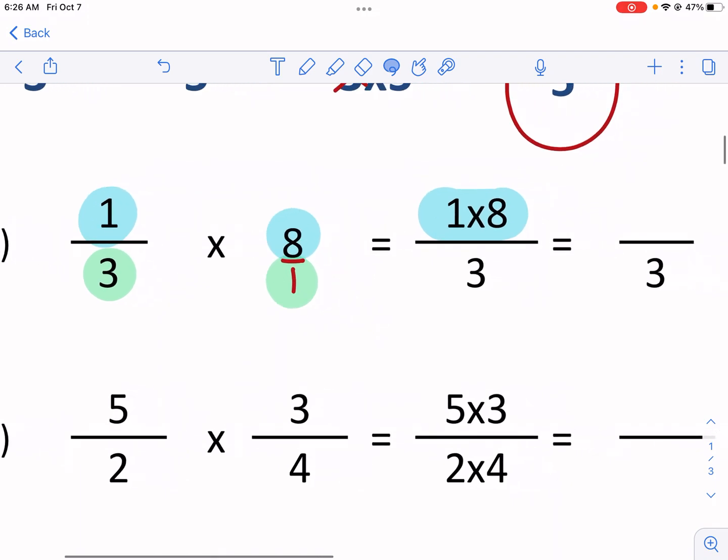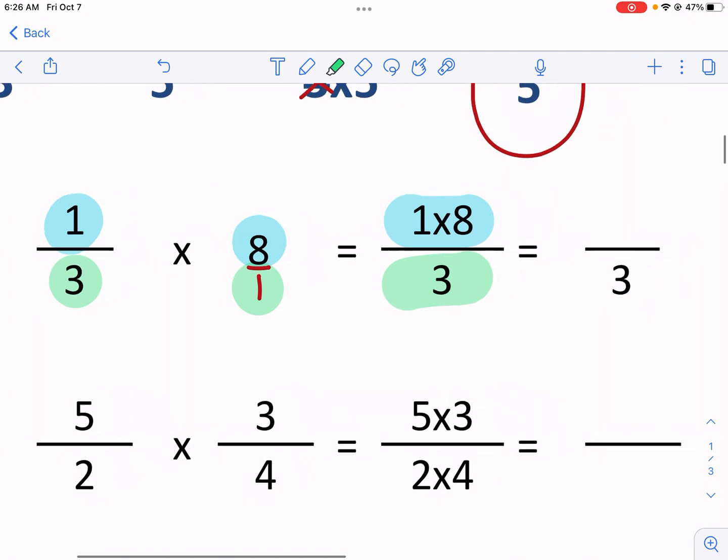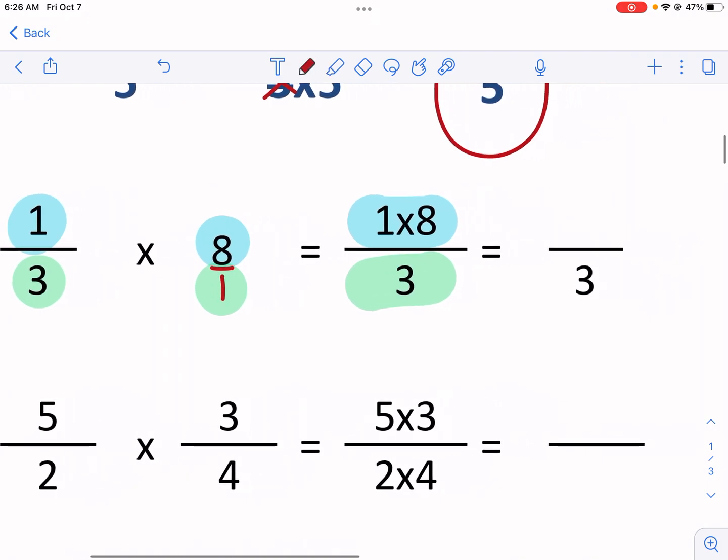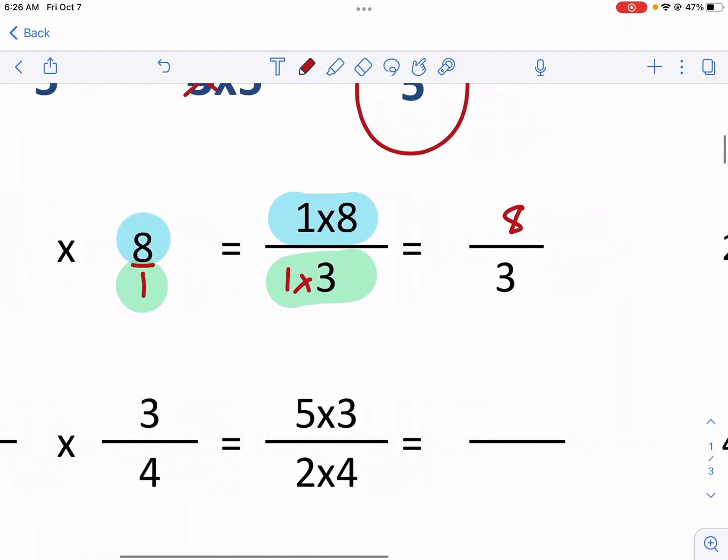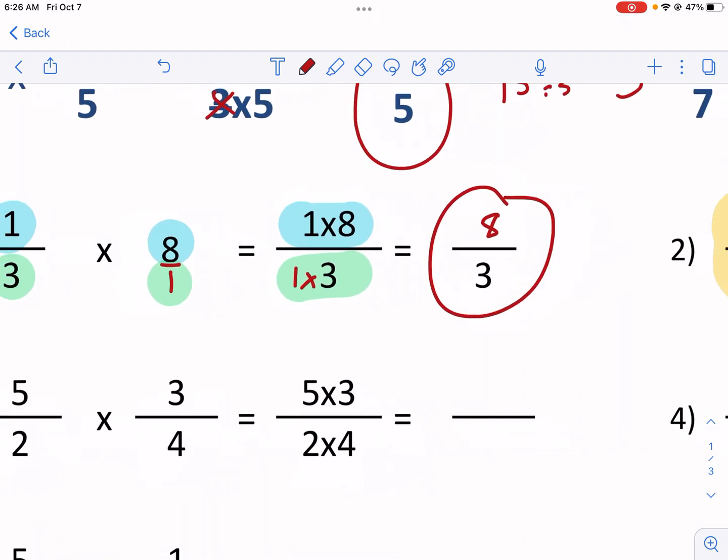So now we can multiply top times top, bottom times bottom, we get one times eight. That's just going to be eight. Three times one, I want to put this here, three times one, and that's just three. And eight thirds is going to be our final answer.